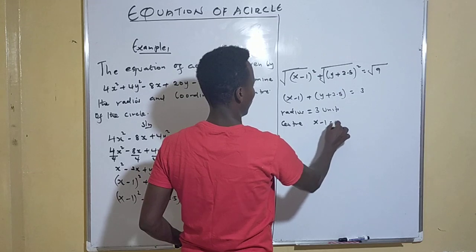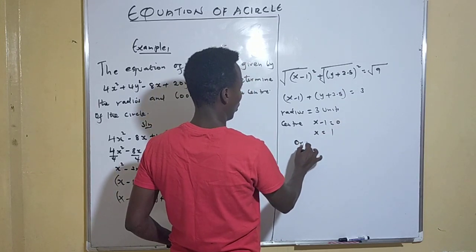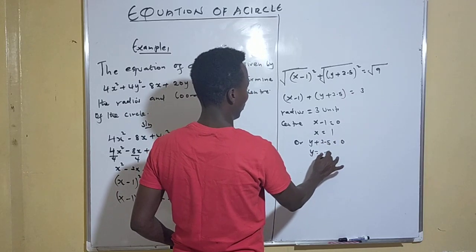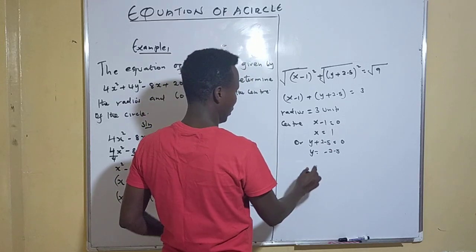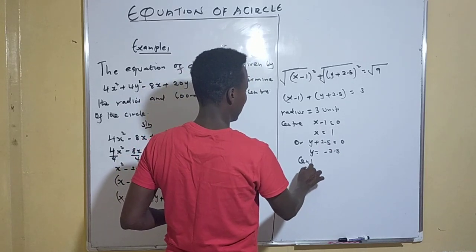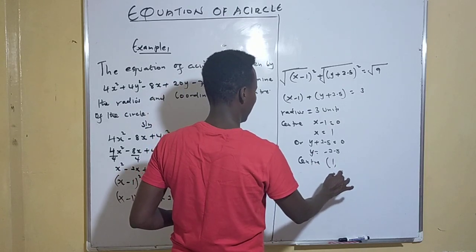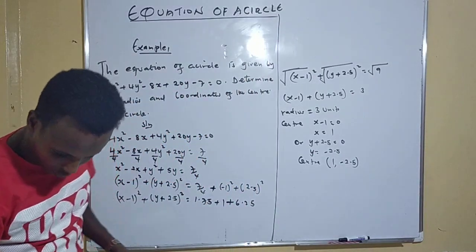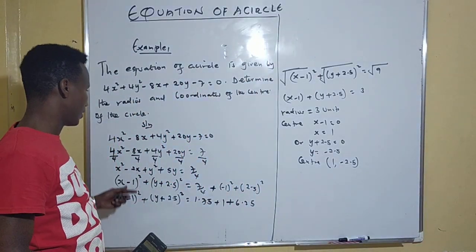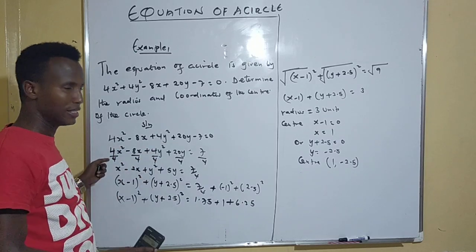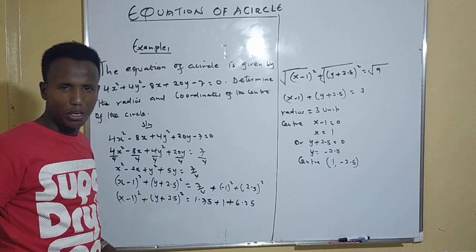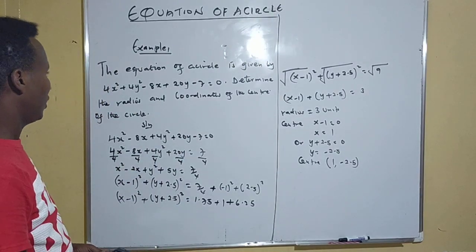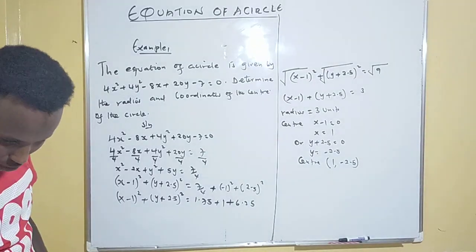For the center: x - 1 = 0 gives x = 1, and y + 2.5 = 0 gives y = -2.5. So the center is (1, -2.5). That is the final answer. The key steps are: move the constant, divide by 4, then complete the square.